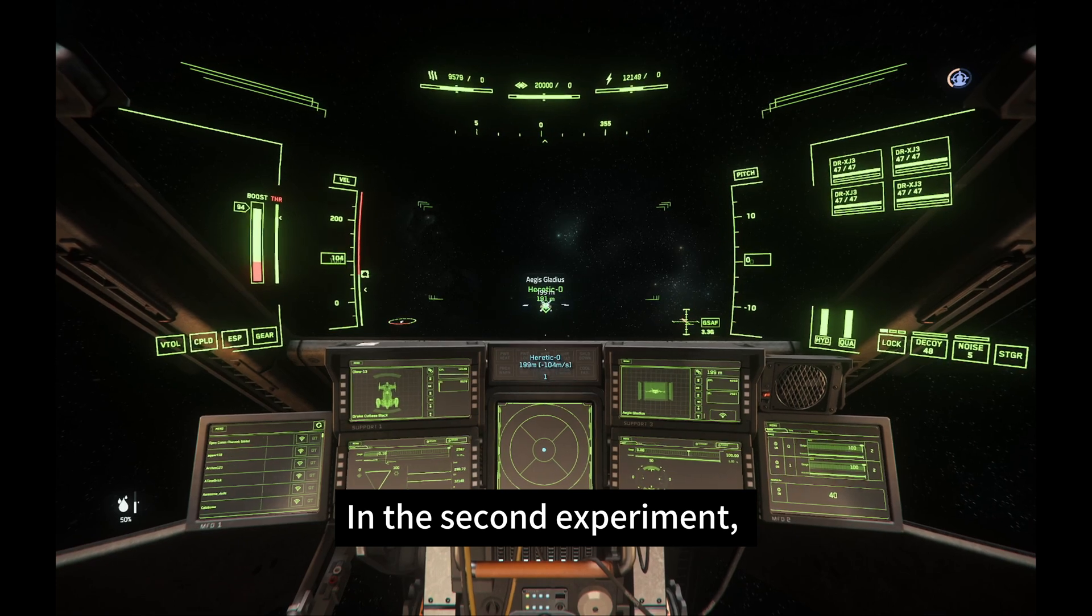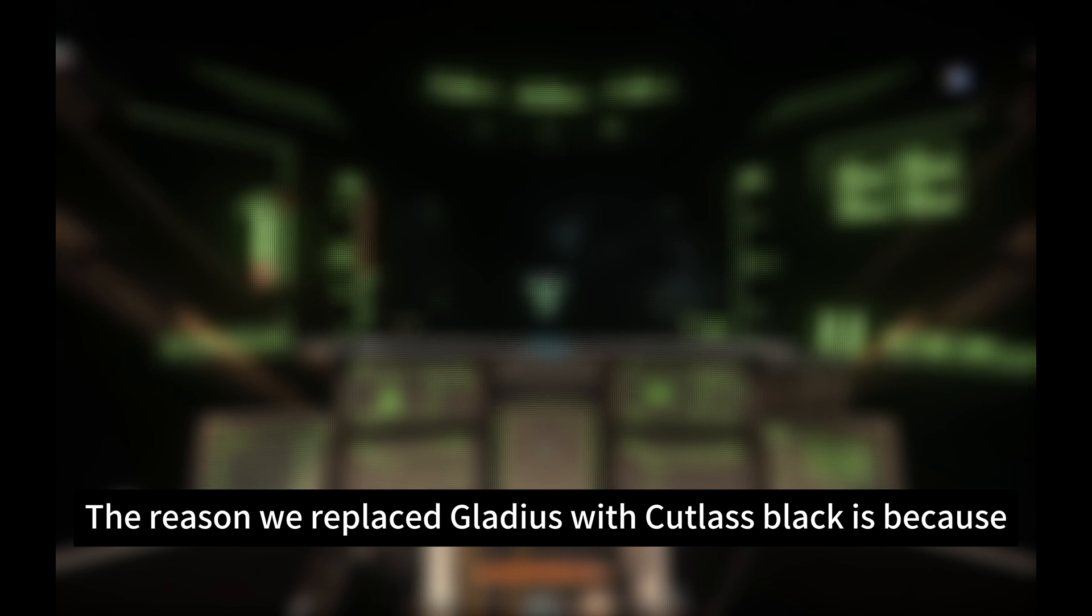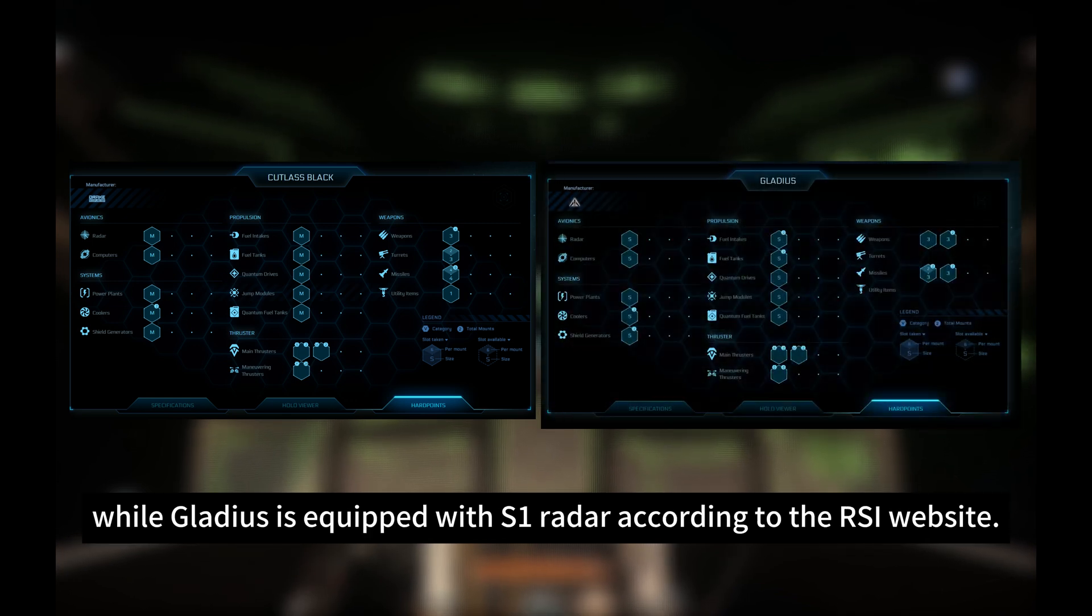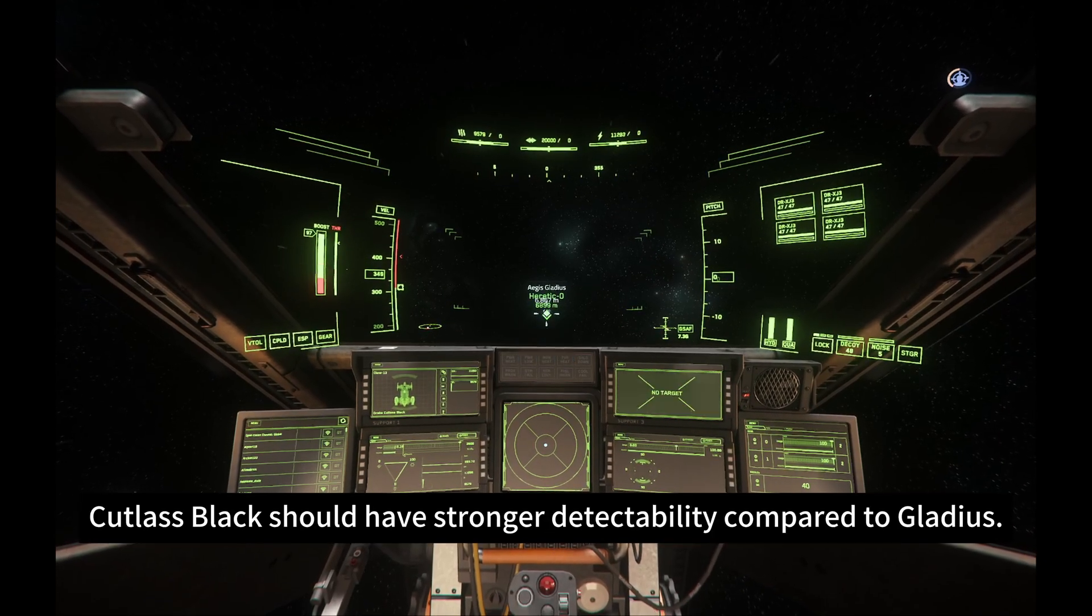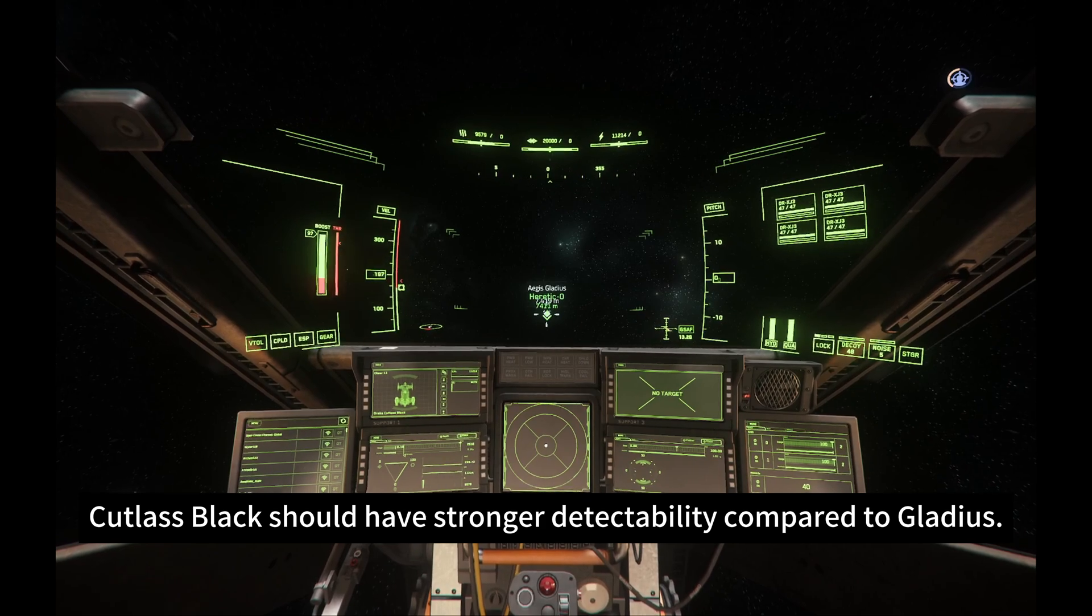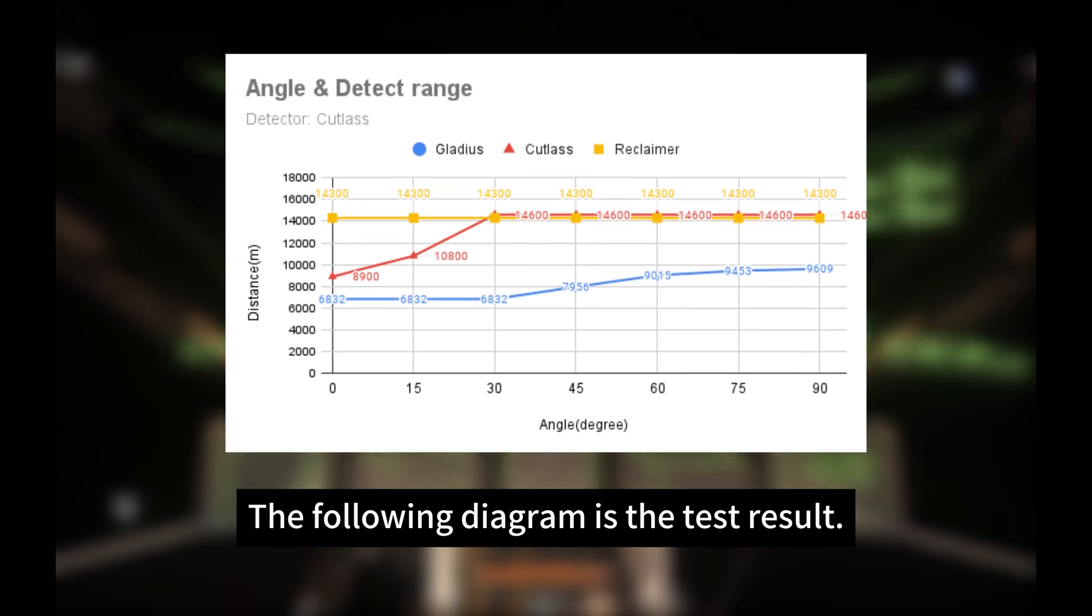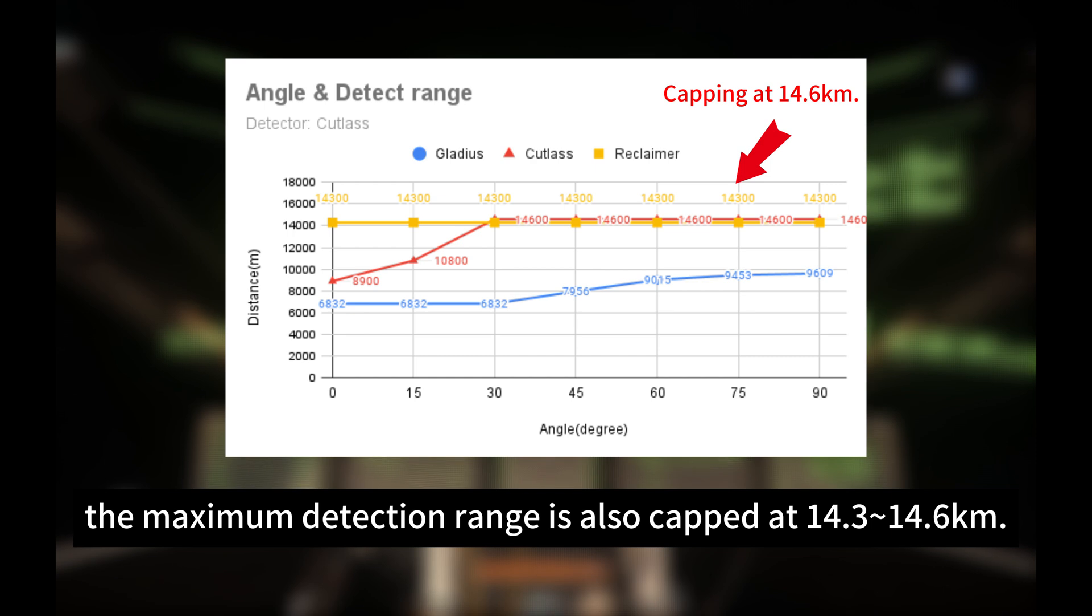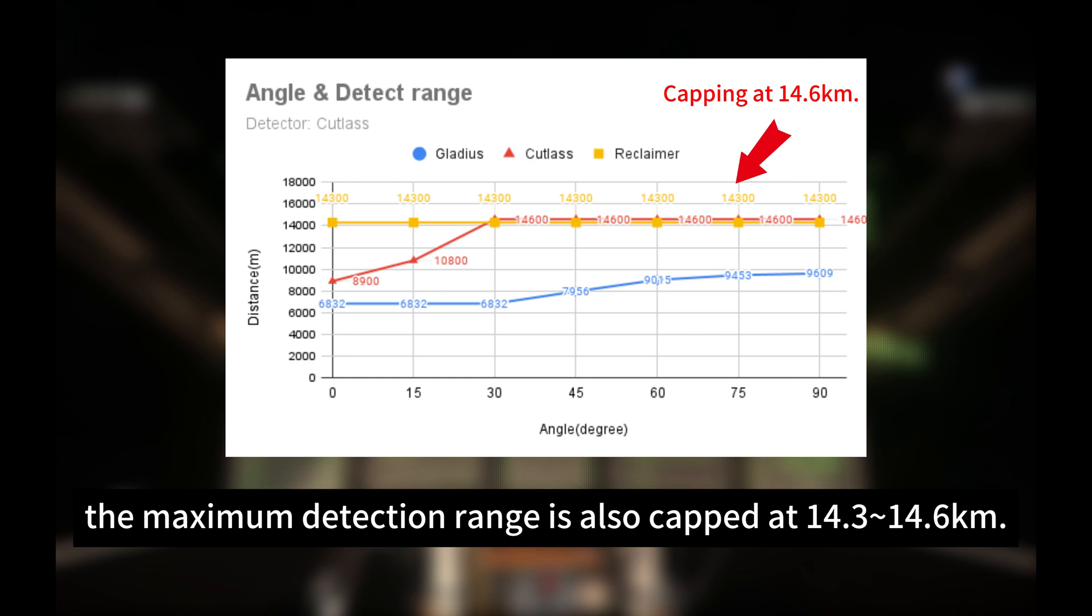In the second experiment, we replace the detector with the Cutlass Black. The reason we replace Gladius with Cutlass Black is because Cutlass Black is equipped with size 2 radar while Gladius is equipped with size 1 radar according to RSI website. In theory, Cutlass Black should have stronger detectability compared to Gladius. The following diagram is the test result. Similar to experiment 1, the maximum detection range is also capped at 14.3 to 14.6 km.